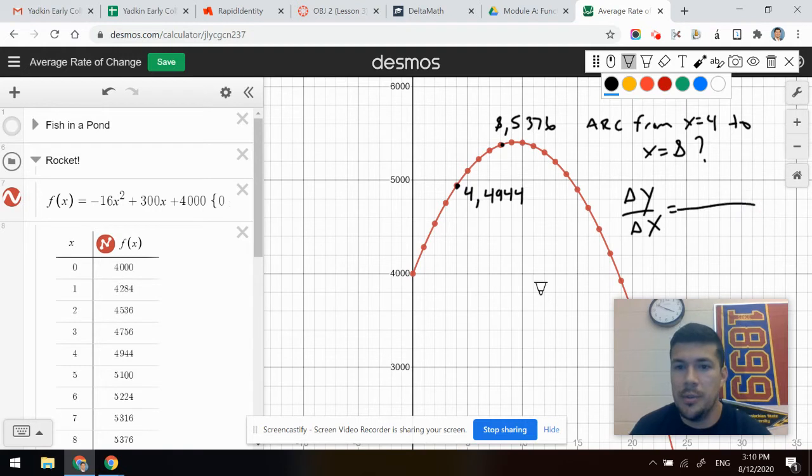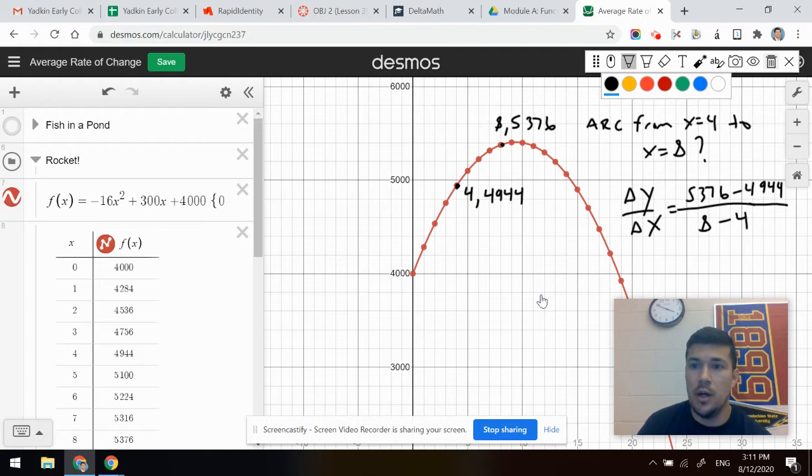So my change in Y is still going to be the difference between fifty three seventy six and forty nine forty four, divided by the change in X, which is going to be the difference between eight and four. That is going to calculate my average rate of change. And let's move on to something else.